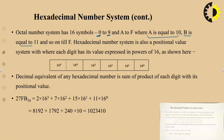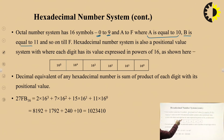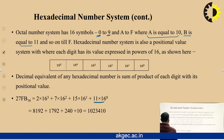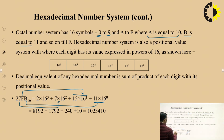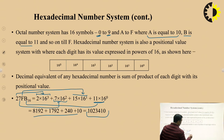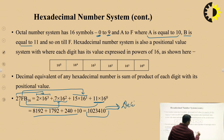The decimal equivalent of any hexadecimal number is the sum of the product of each digit with its positional value. For example, consider 27FB₁₆. B equals 11, so it is 11 × 16⁰. F equals 15, so it is 15 × 16¹. Then 7 × 16², and 2 × 16³. Solving all these and adding gives the equivalent decimal number, which can be verified to contain only digits 0–9, confirming the conversion.